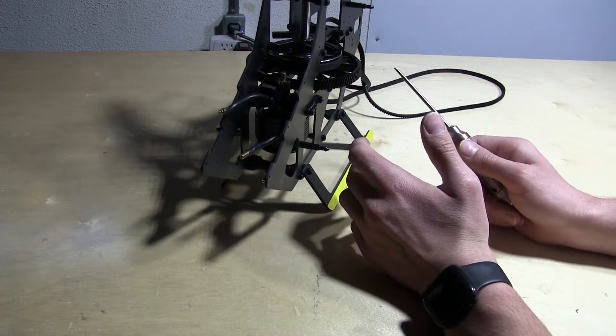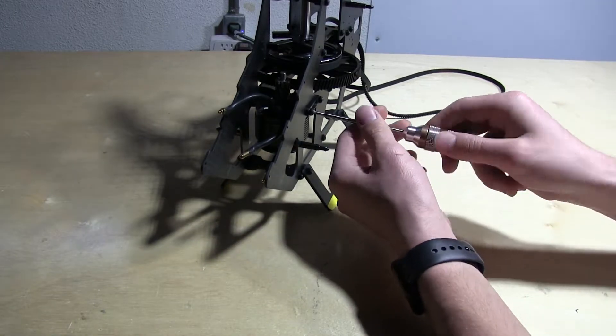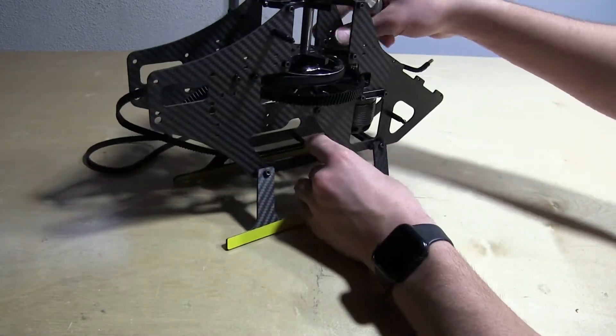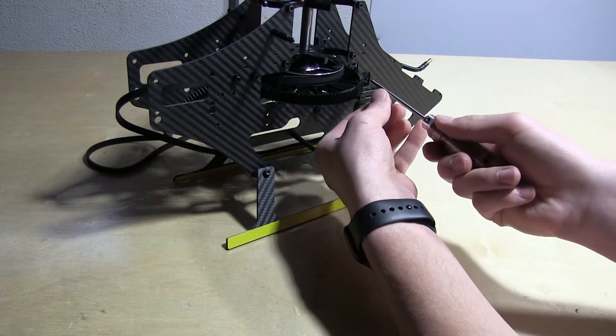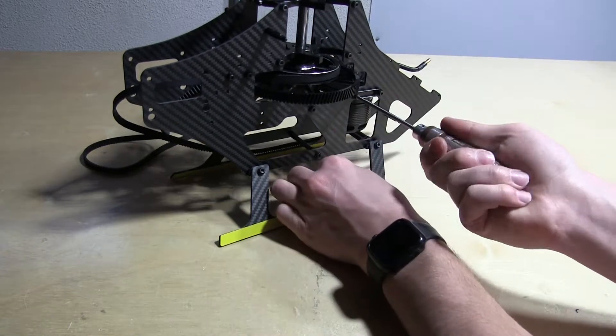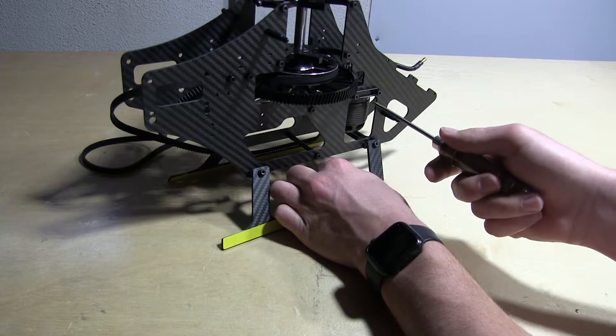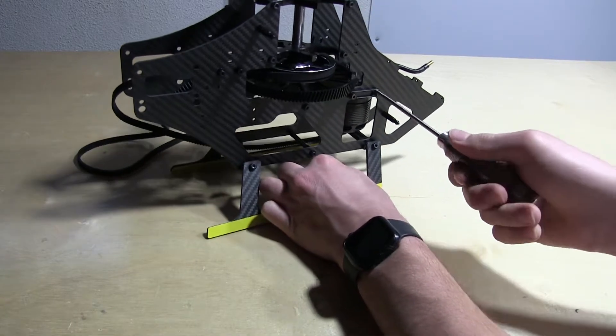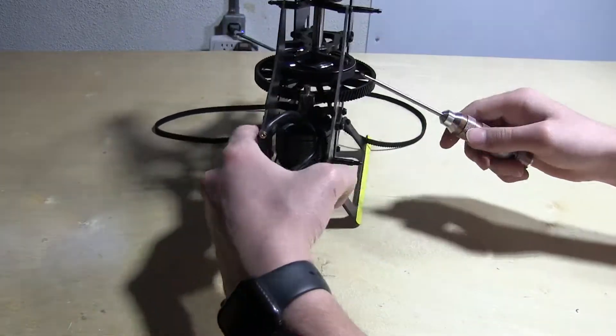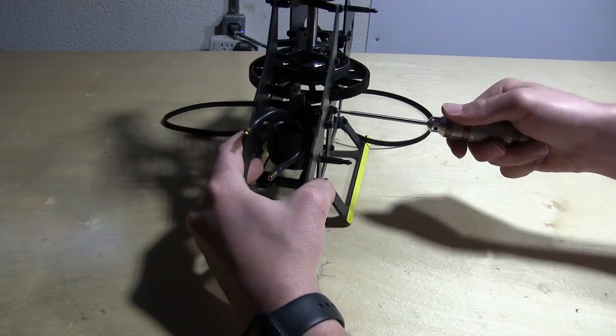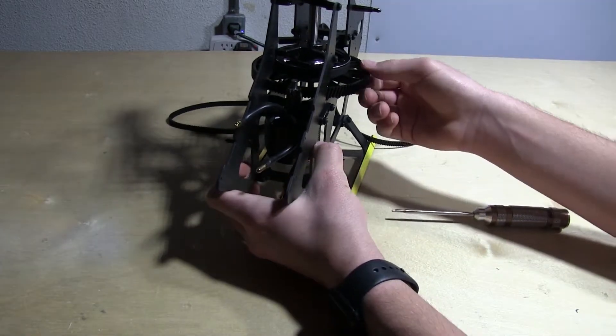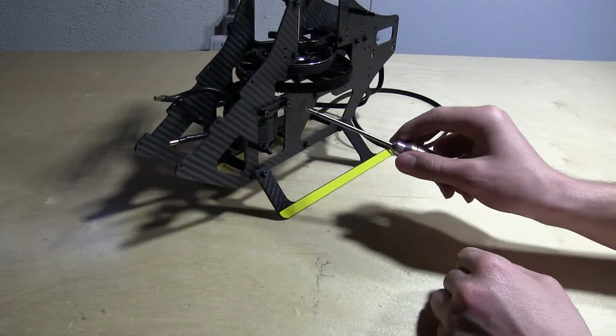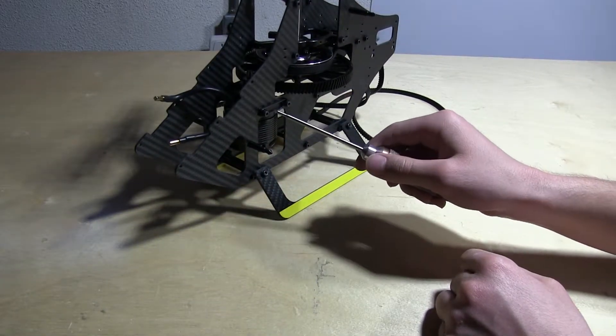Once you have your gear mesh set to where you like it, you can go ahead and tighten down these four screws. I usually like to go opposite so I'll tighten down that one and tighten this opposite one like so. And we are good to go. I don't know if you can see it but there's just a very, very slight click. So the gear mesh is good and we have the motor installed in the airframe.